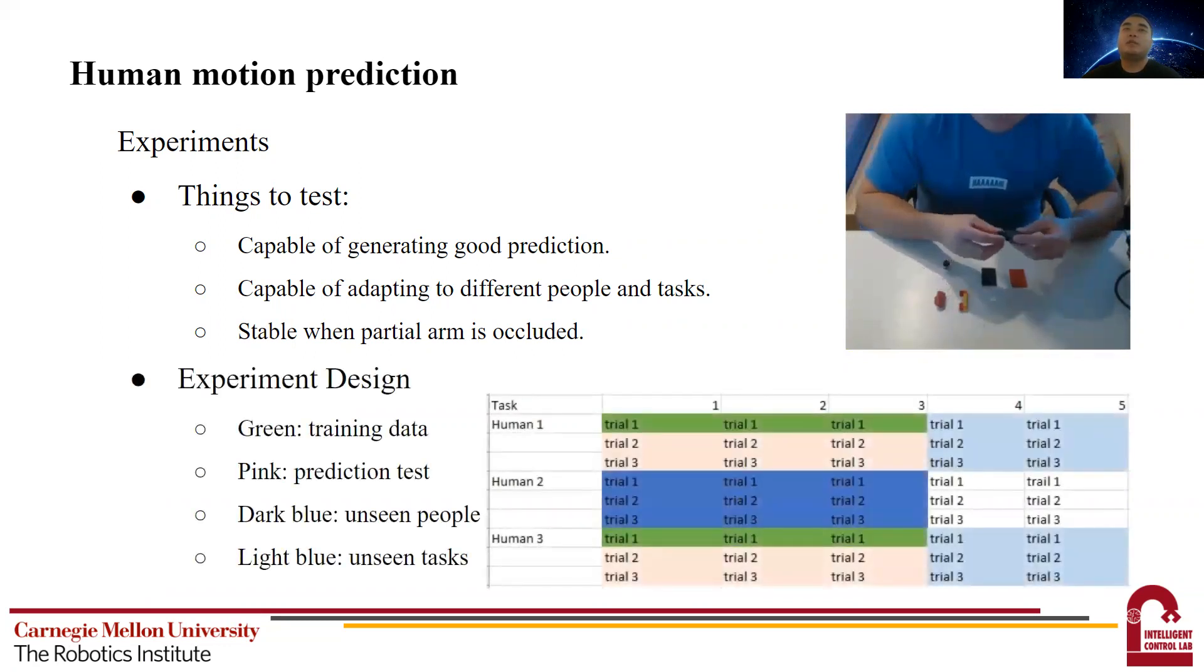Because there is no available data on this study, we first collected our data. As shown in this case, we use lego assembly to simulate the situation in the industry. The human subject is given a set of lego pieces on the desk. And the goal is to use these pieces to assemble a target object.